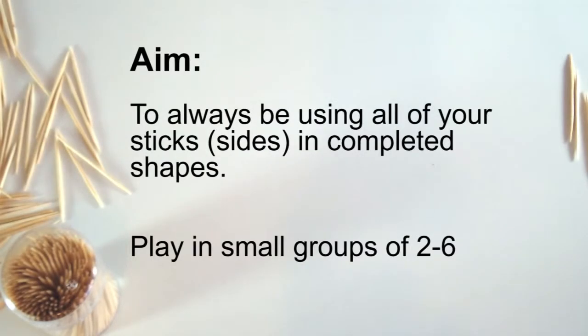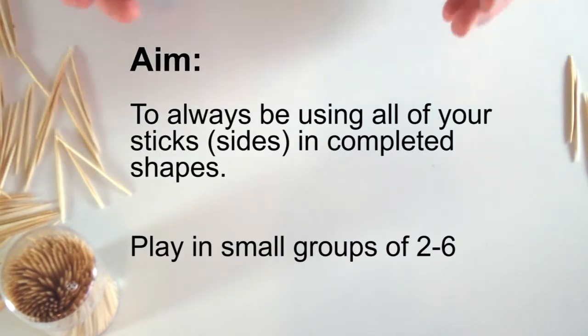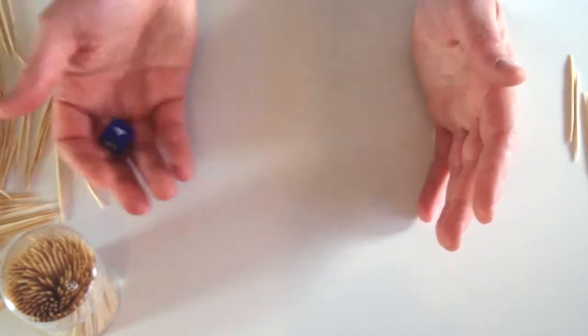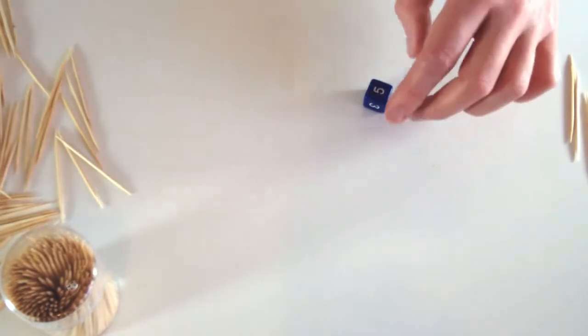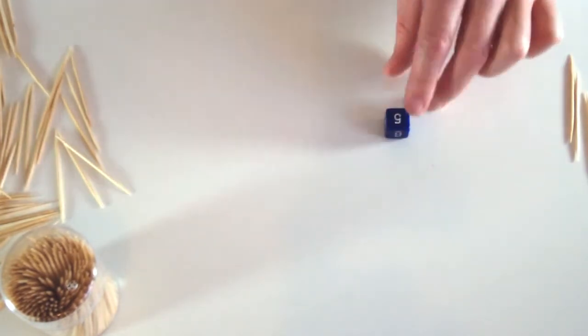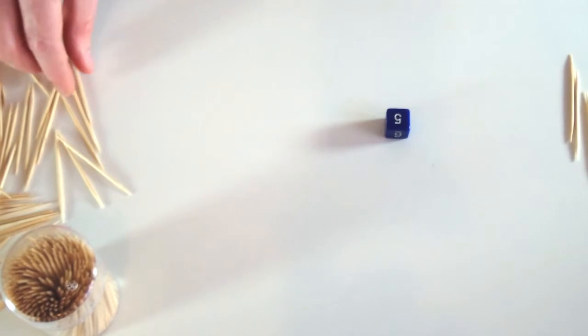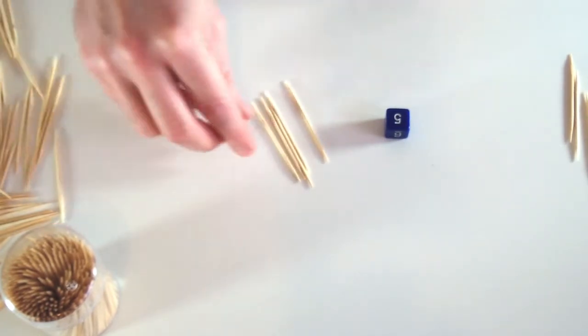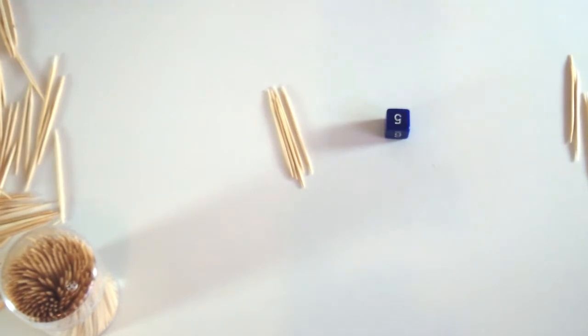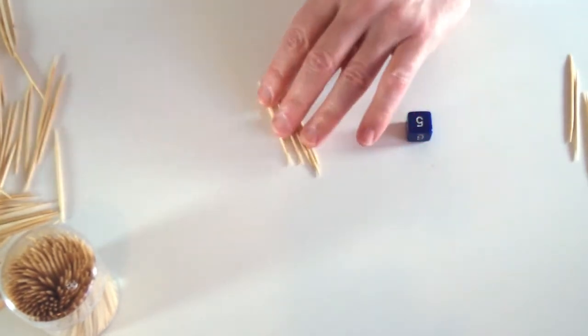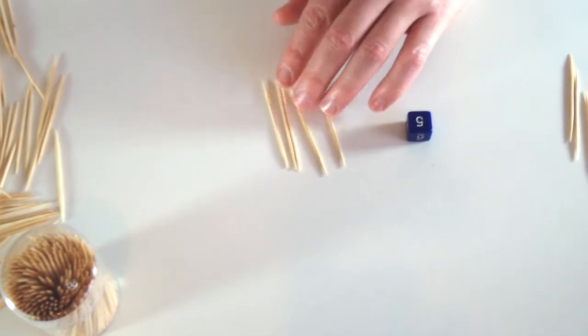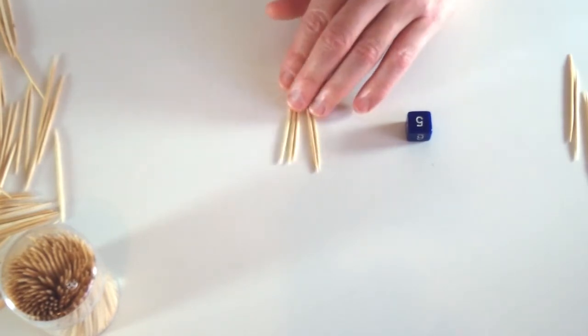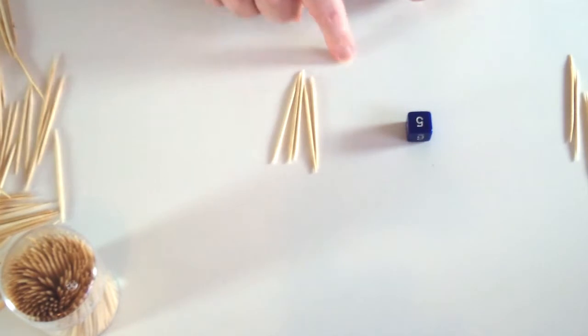A good sized group to play this game in is between two to six students. So each student has their turn one after another and takes their turn rolling the dice. My first roll I've rolled a five. So every time someone rolls a dice they pick that many sticks. I've got five sticks to add to my collection. Now every time students have sticks added to their collection, they need to use every single stick in a completed shape.